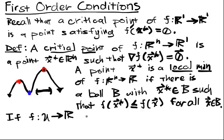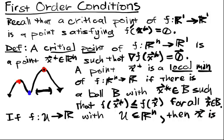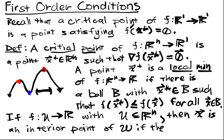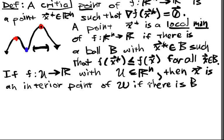with U a subset of Rn, then x is an interior point of U if there is a ball B